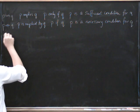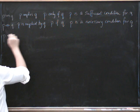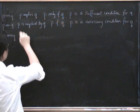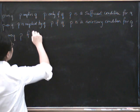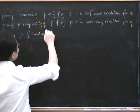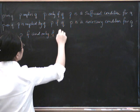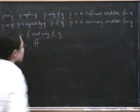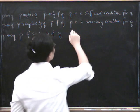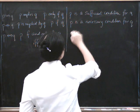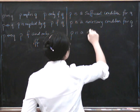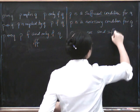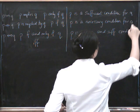So if we have an implication that goes in both directions, then we have P is true if and only if Q is true, which we sometimes write iff with two F's to stand for if and only if. And we say also that P is a necessary and sufficient condition for Q.